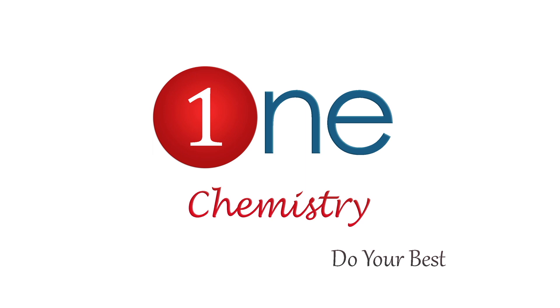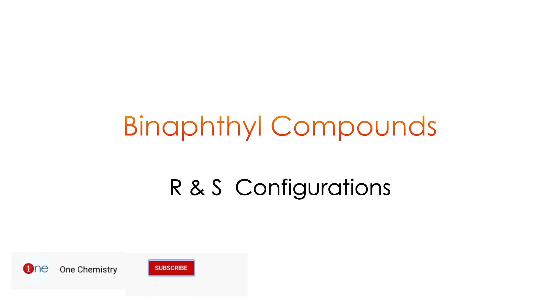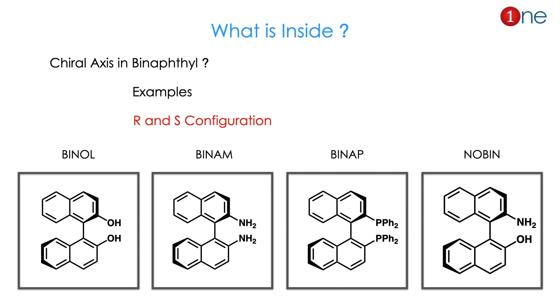Welcome to One Chemistry — always try to do your best. Now we are going to see binaphthyl compounds and their chirality. Later we will see how we can find R and S configuration. First we will see how binaphthyl is chiral by chiral axis, then examples of it, then prediction of R and S configuration. I have given some representative examples: BINAL, BINAM, BINAP, and NOBIN.